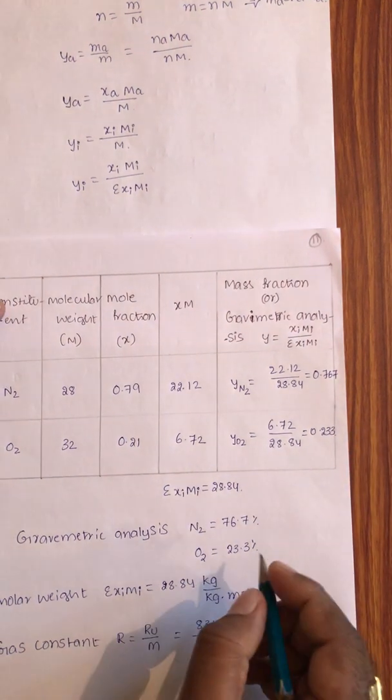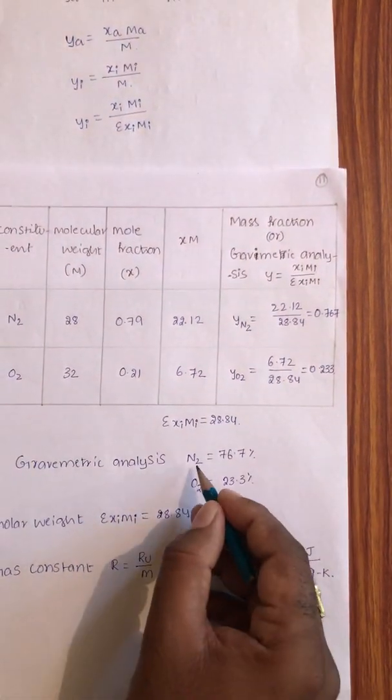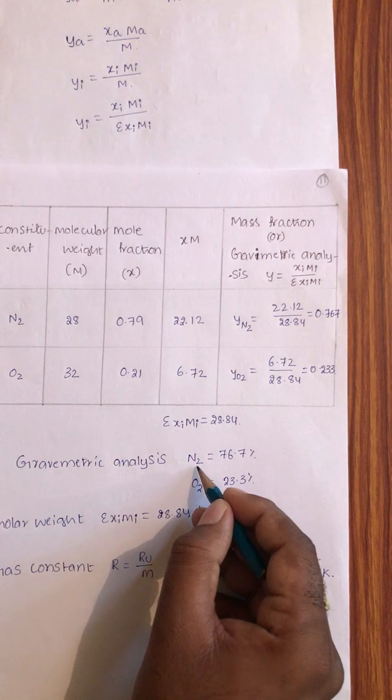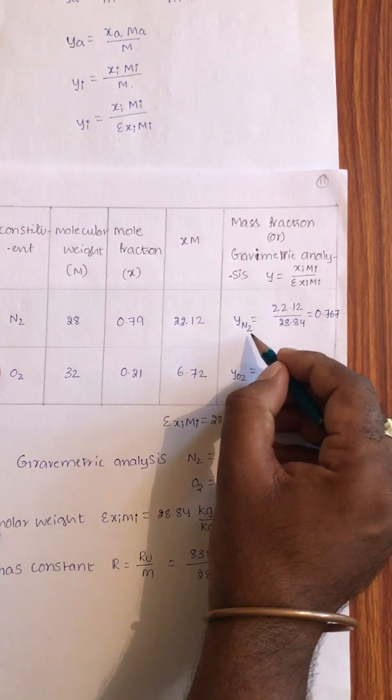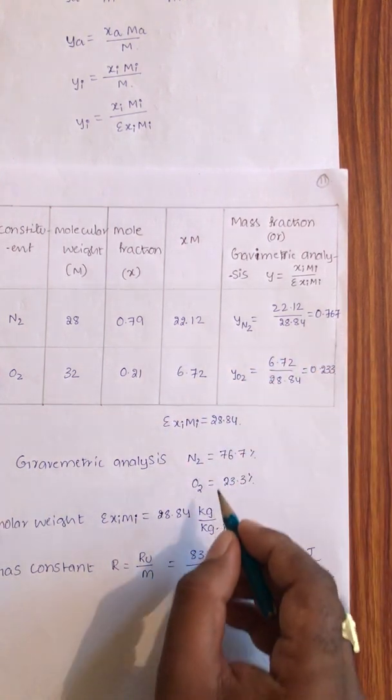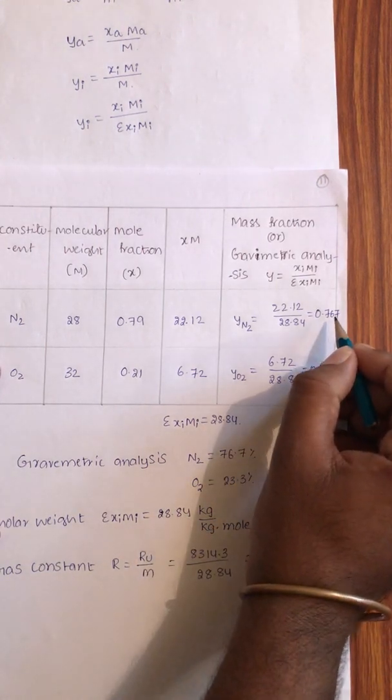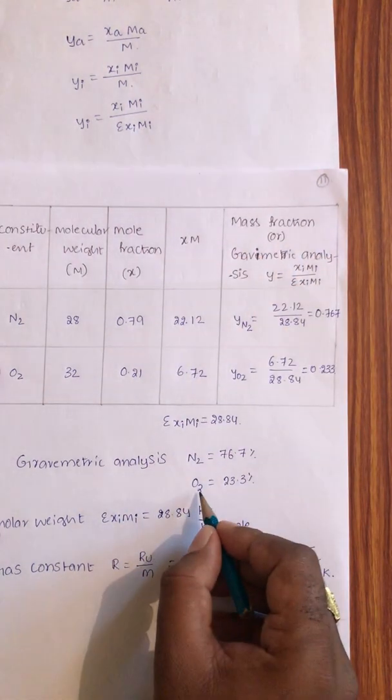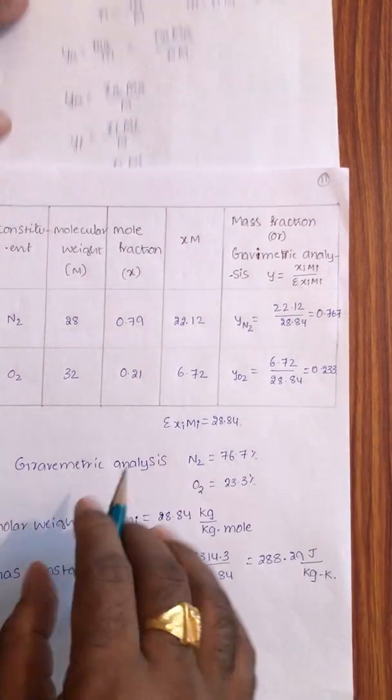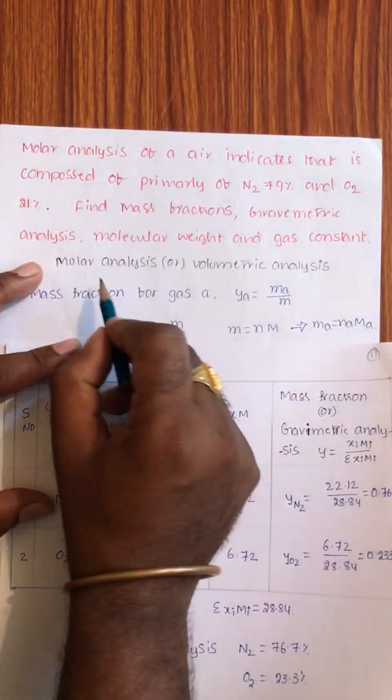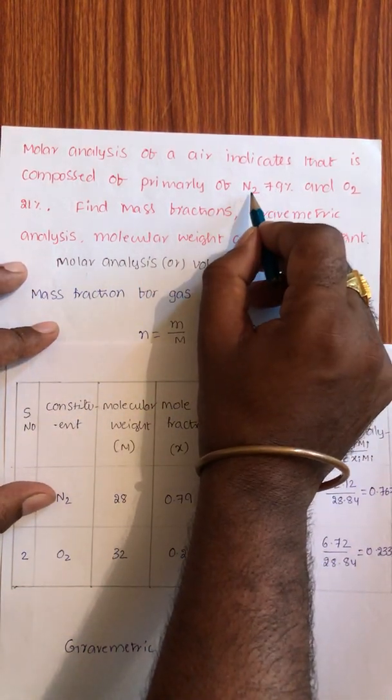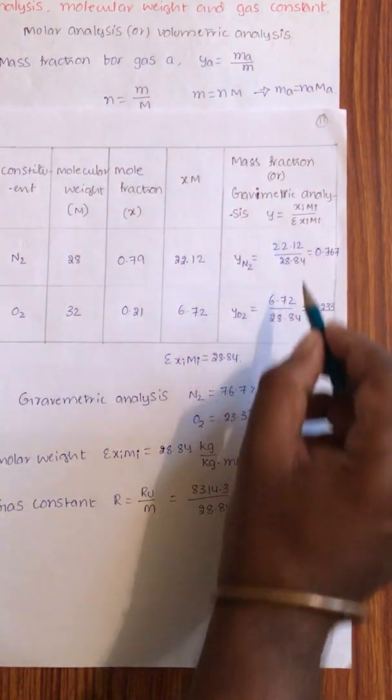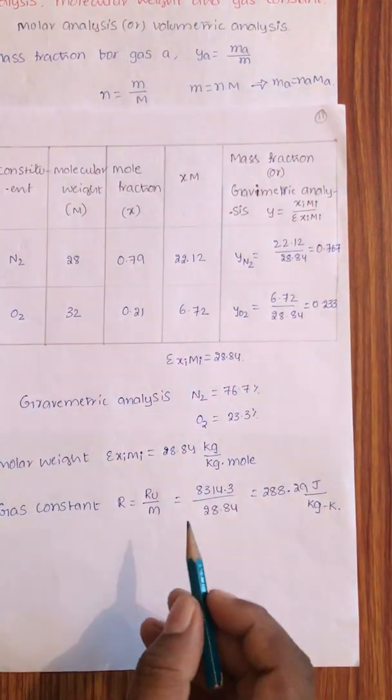If I combine these two, I will get 1. So gravimetric analysis or mass fractions: for nitrogen it is 76.7%, for oxygen 23.3%. On volume basis, 79% nitrogen and 21% oxygen by volume. But 76.7% nitrogen and 23.3% oxygen by mass.